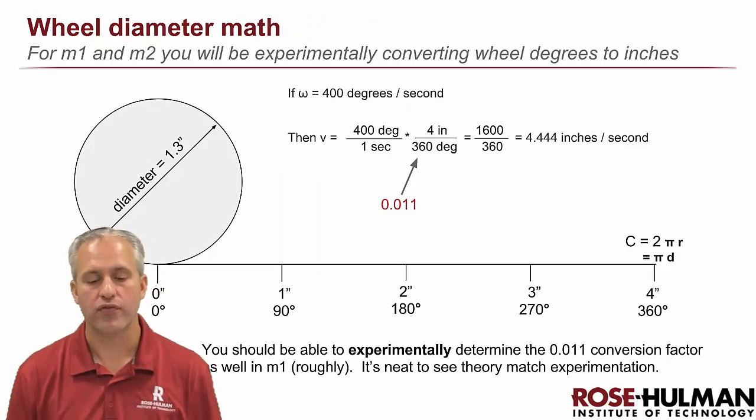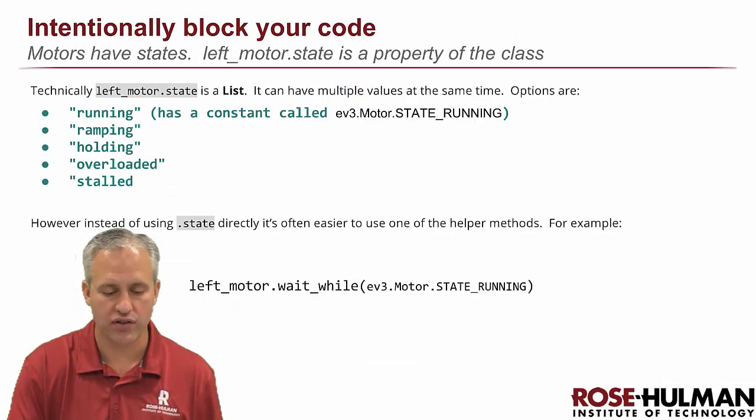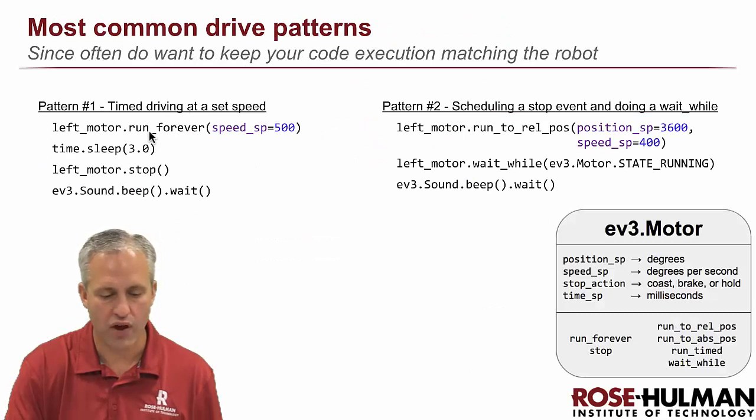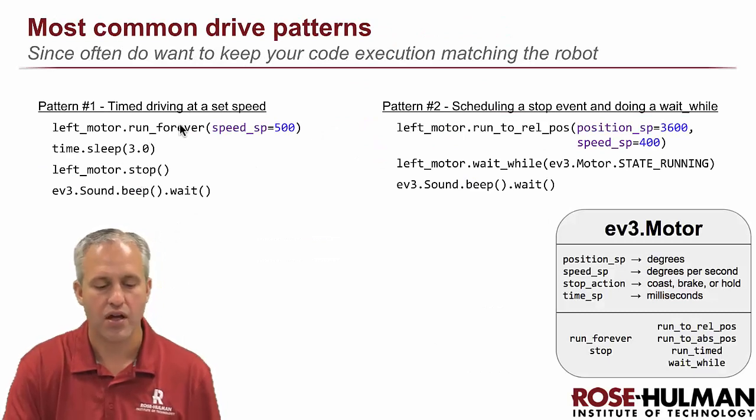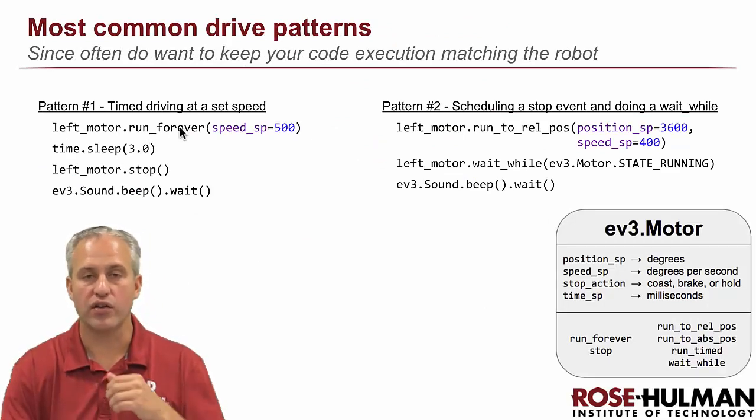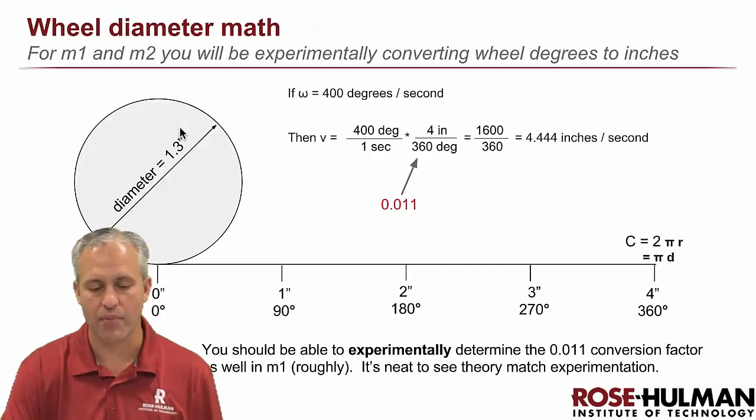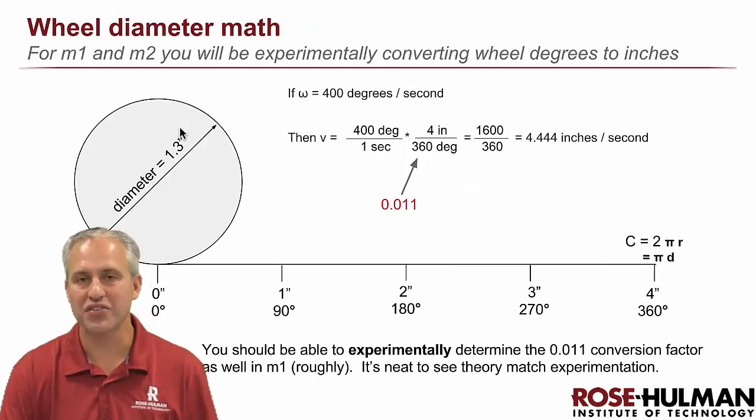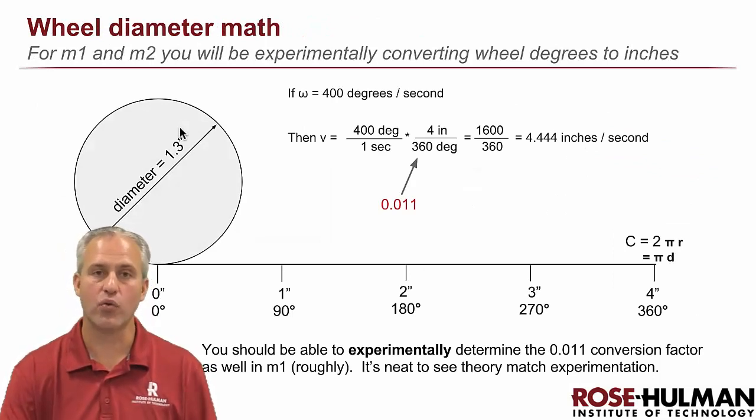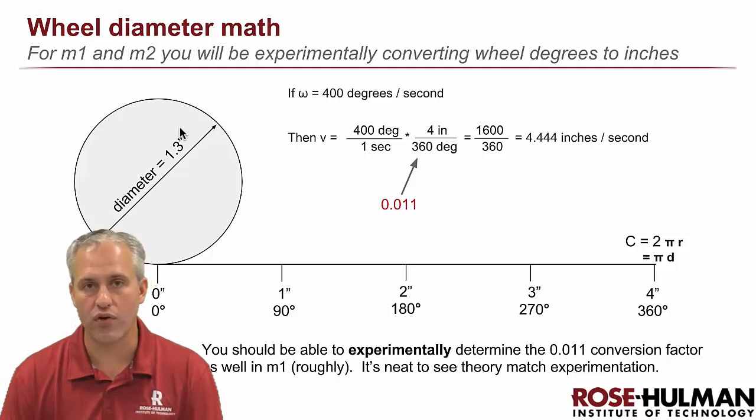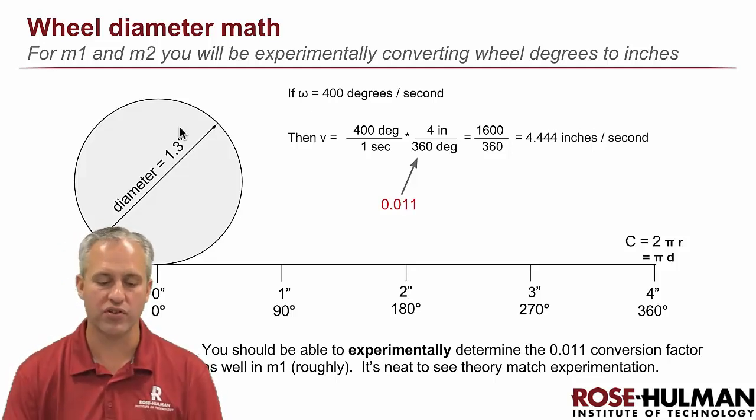The first module is all about using this pattern that we saw last time - this run forever, sleep, and then stop. Module one, you have to set the speed, you have to know how long to run at that speed, and then you have to stop. It's kind of an annoying way to use the robot. We make you do it in module one just so you get used to it. Module two will show you a better way to do it, to use those more advanced commands like run to rel position and things like that.